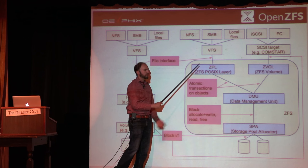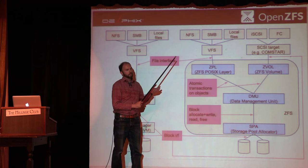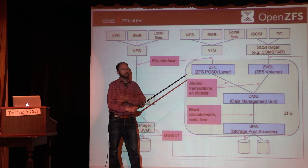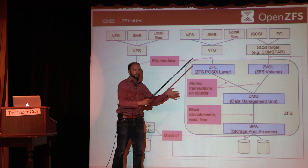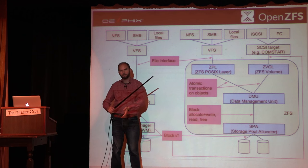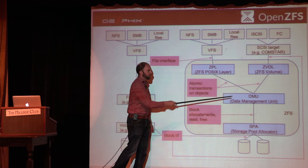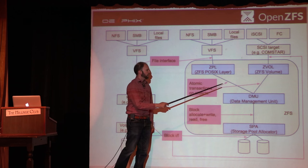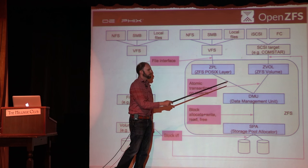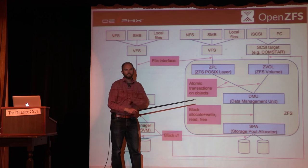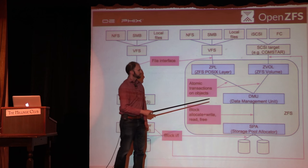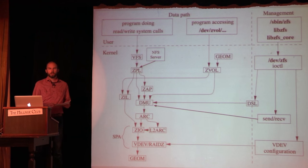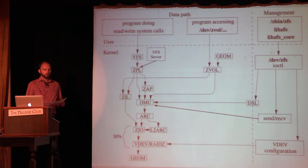The ZPL — ZFS POSIX Layer — is responsible for all file system POSIX-like semantics: the idea that there are files and directories, directories have entries, there can be hard links, link counts, permissions, and owners. The ZPL doesn't worry about how objects are stored on disk. It just knows it can consume objects — an object is like a file without additional attributes, just an array of bytes. ZFS has indirect blocks that point to other blocks constituting a file, but the ZPL doesn't need to worry about that; it just tells the DMU: put this data into offset X of file Y, and the DMU worries about how many layers of indirection are needed.